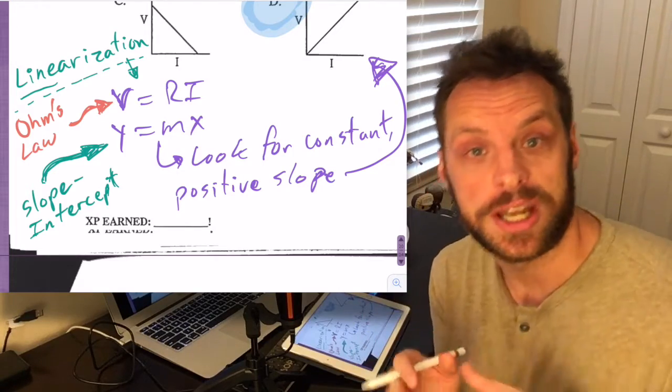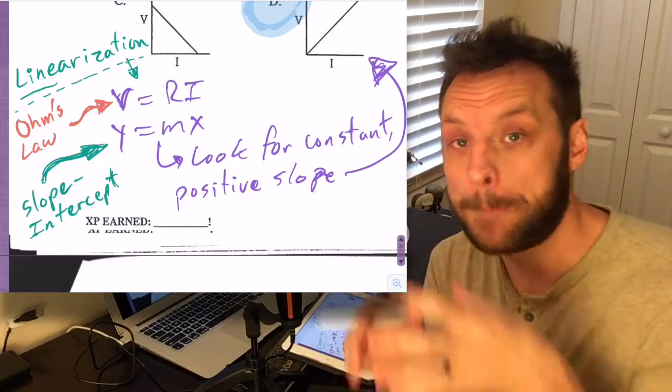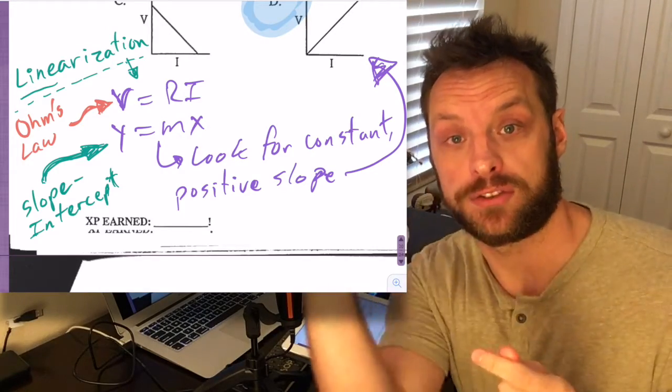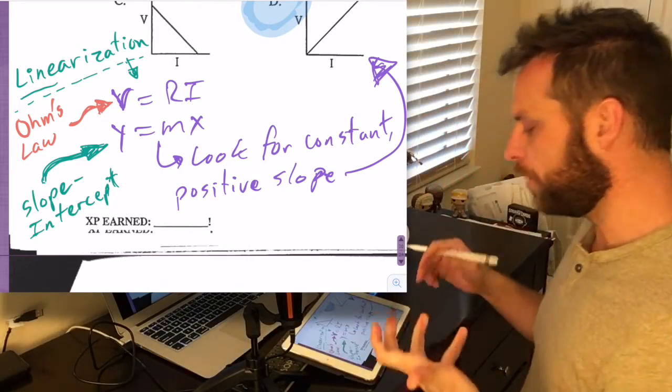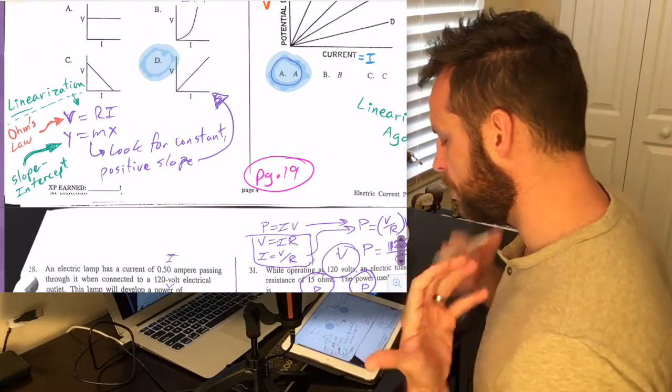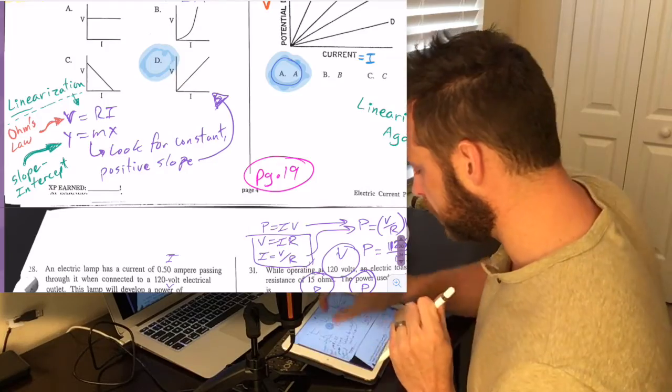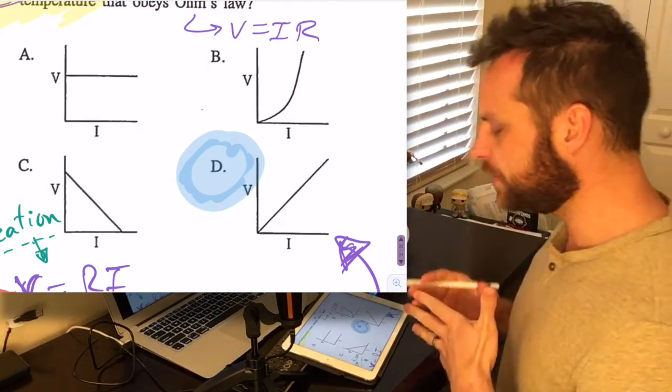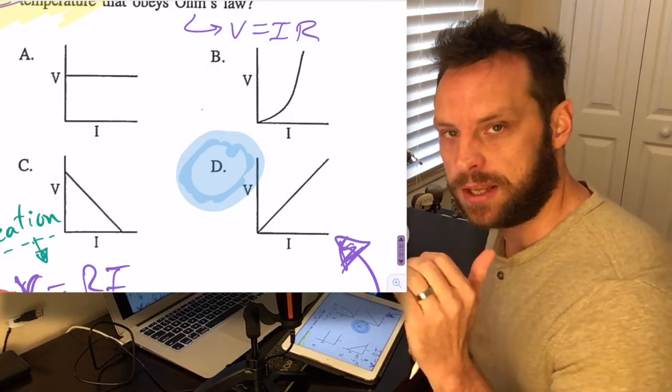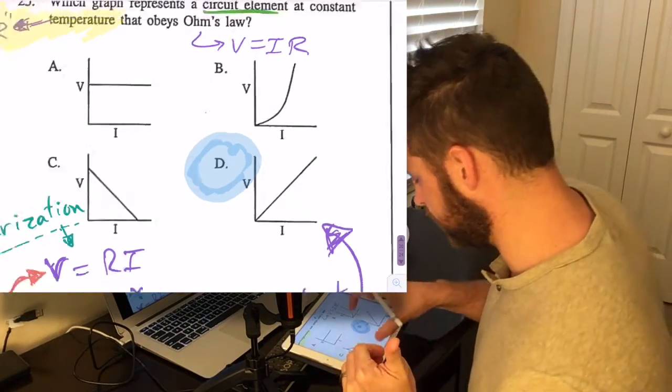And Y equals MX is the equation for a line. And so linearization is just like saying lineify or make this thing look like a line so that when you graph it, you get a nice straight line. The slope then will tell us something. That's why we do this - we can find something new from things that we've measured. And so you can see all the choices.